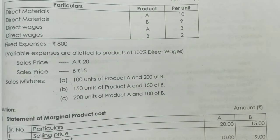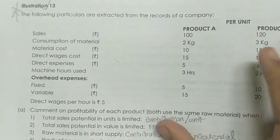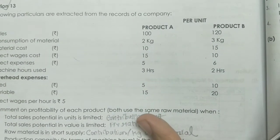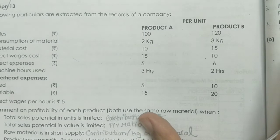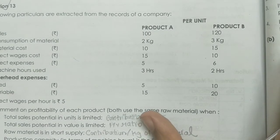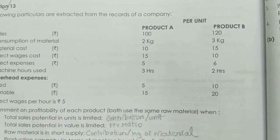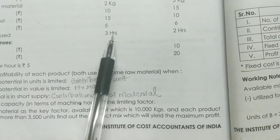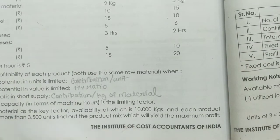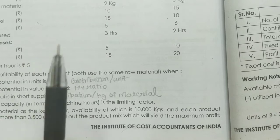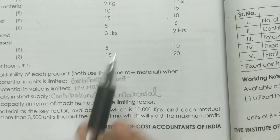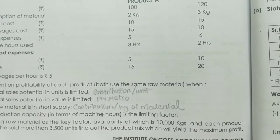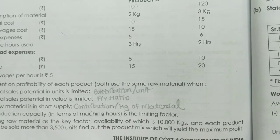This is the third question. In session number 30, we have information about sales, consumption, material, direct overhead expenses, and direct wages. We need to comment on the profitability of each product. One product uses a lot of raw materials. Profitability depends on raw material usage.